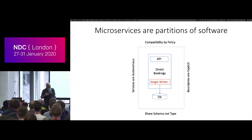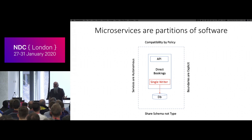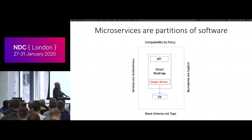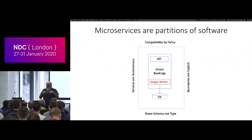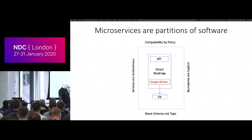Microservices are SOA, and they fall under the four tenets of service-oriented architecture defined by Don Box. The first is boundaries are explicit — the only way you get to talk to my service is through an API, whether that's HTTP, AMQP for messaging, or gRPC. Compatibility by policy means we all agree on the protocol. Services are autonomous means this must be an independently deployable unit — I cannot have any dependencies that I can't deploy on my own schedule. If my boundaries are explicit, nobody outside is allowed to touch my database or code — only through the API.